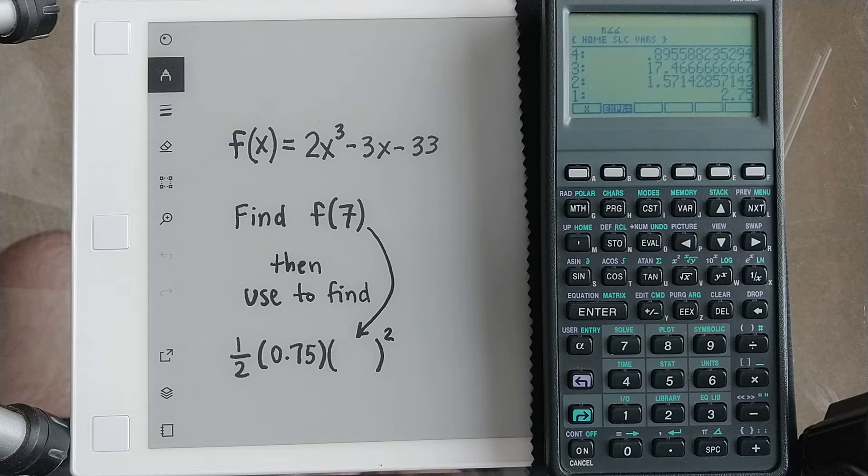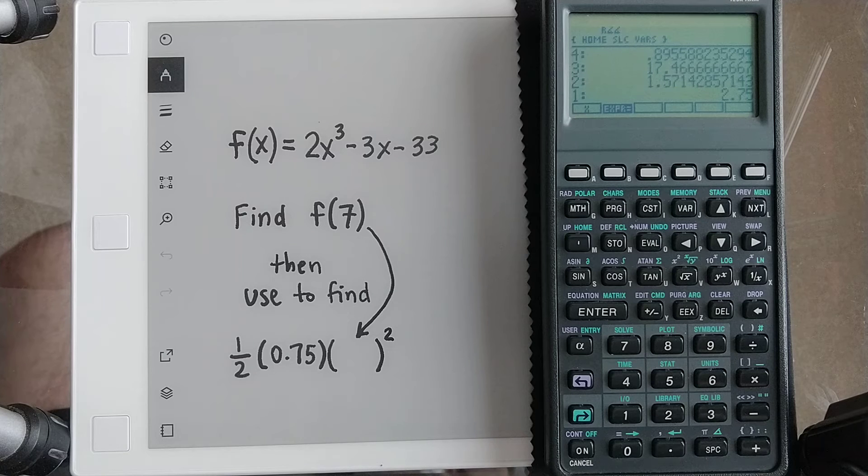Okay, let's look at this. We got f of x equal to 2x cubed minus 3x minus 33. We want to find f of 7, and then we're going to use that in another calculation.